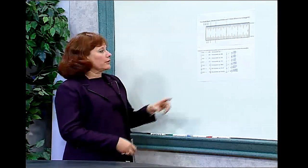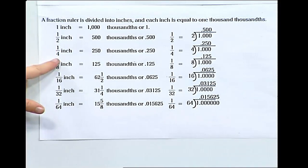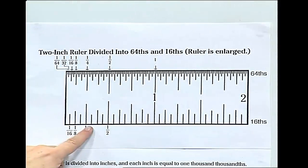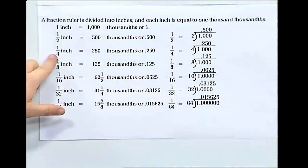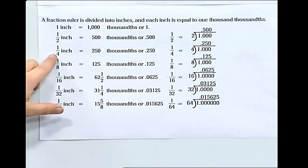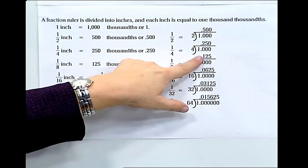You can continue to divide the ruler into smaller and smaller increments. A quarter of an inch or a fourth of an inch, which takes up only this much space, is equal to two hundred fifty thousandths or .250. You can get that number by dividing four into one.